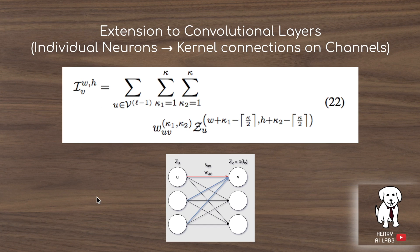The Edge Popup algorithm was demonstrated with fully connected neurons, but this paper explores image classification with convolutional networks and Wide ResNets. The extension to convolutional kernels — described in the paper's appendix — involves thinking about how kernels connect to different channels or feature maps, translating the sparsity concept from fully connected networks to convolutional layers.